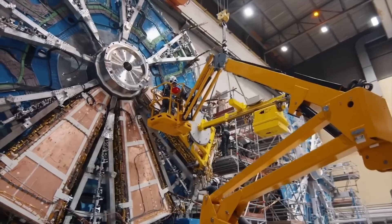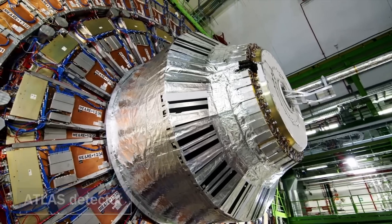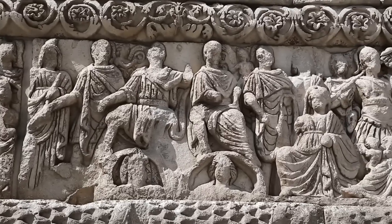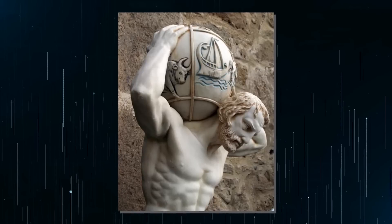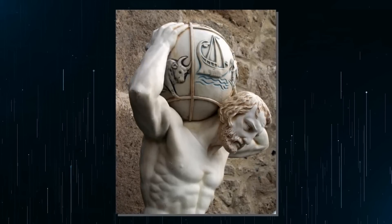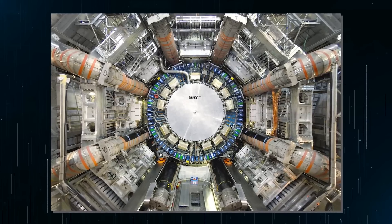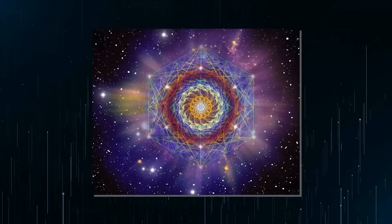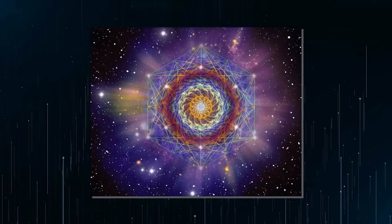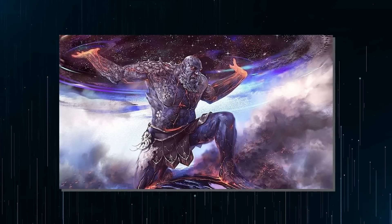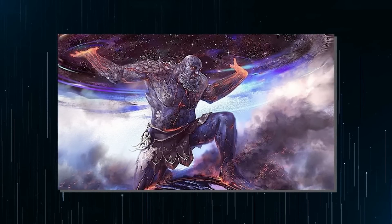For starters, the LHC has a particle accelerator called the Atlas Detector. If you're a fan of Greek mythology, you'll know that Atlas was the titan who held up the sky on his shoulders. And what does the Atlas Detector do? It helps us understand the fundamental structure of the universe, just like Atlas held up the fundamental structure of the world. Clever, right?